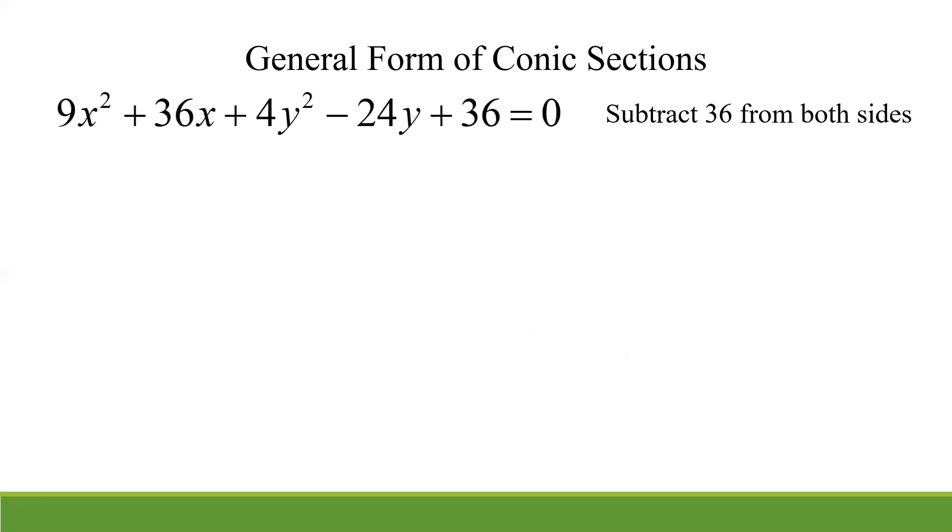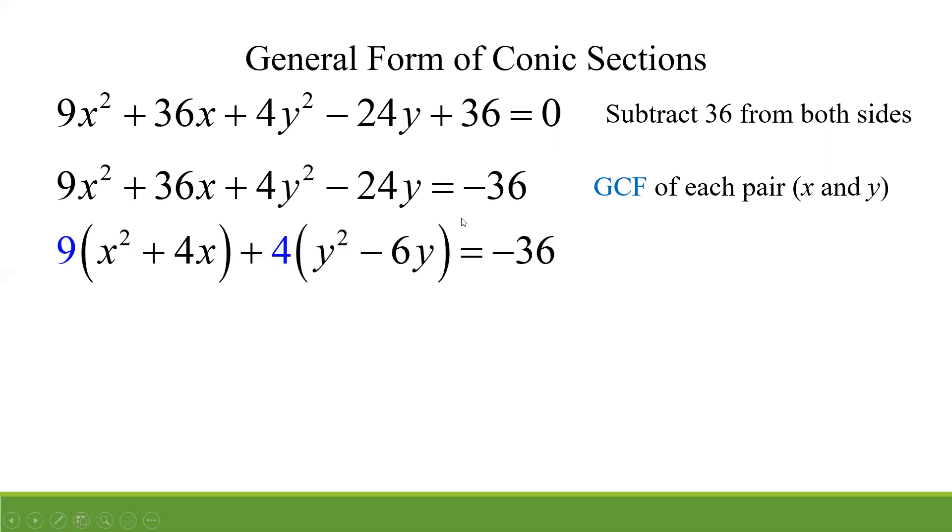So the steps are going to be this. We're going to gather the variables on one side. Unless there's only one square term, it's a little bit different case. It's our parabola case. We'll talk about that in just a second. Complete the square and then get into standard form. So here's our first one. So I'm going to subtract 36 from both sides, just like normal. And now that same, that last example I did with the GCF, we want to find a GCF of each pair. So one GCF for the X pair, one GCF for the Y pair. So for the X's, notice I can take a nine out of both of those. And out of the Y's, I can take a four out.